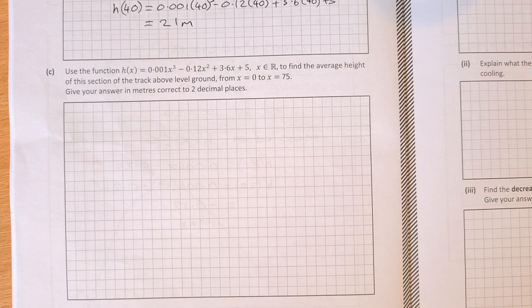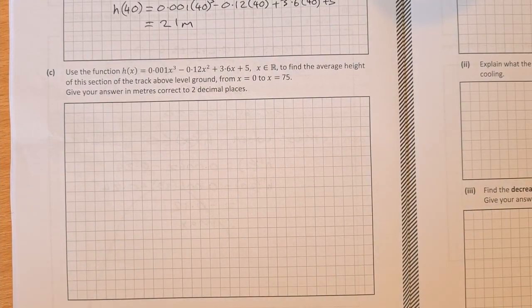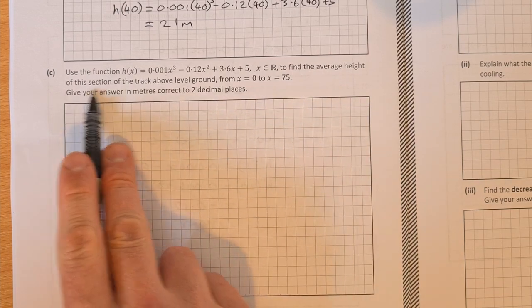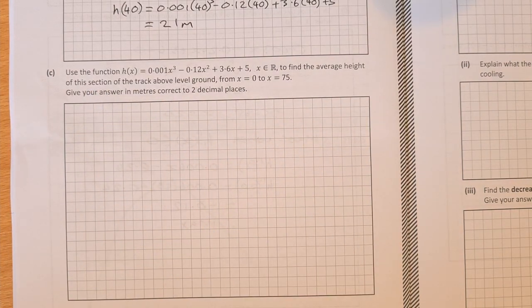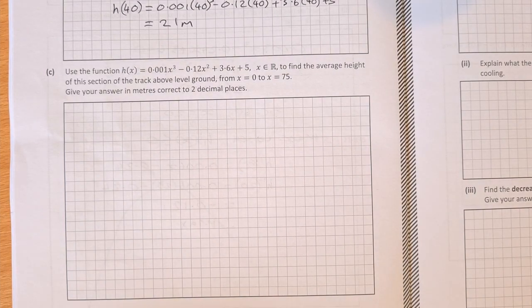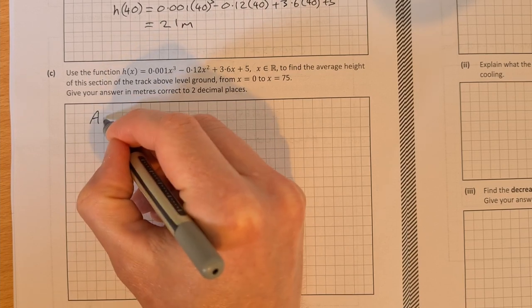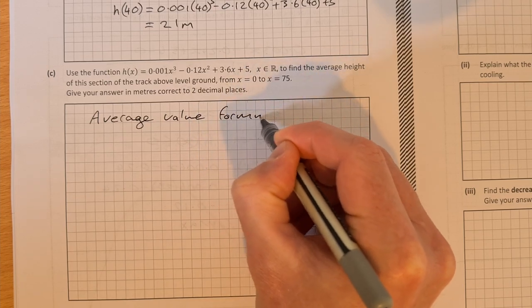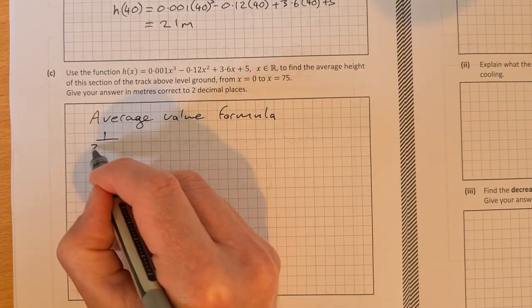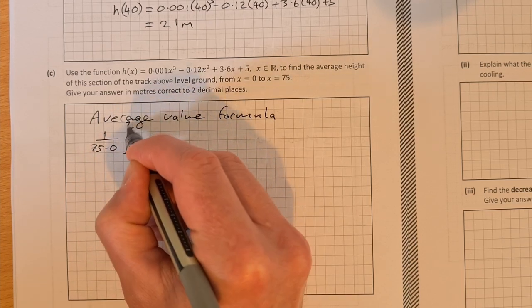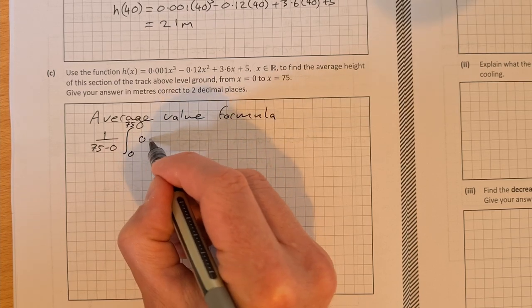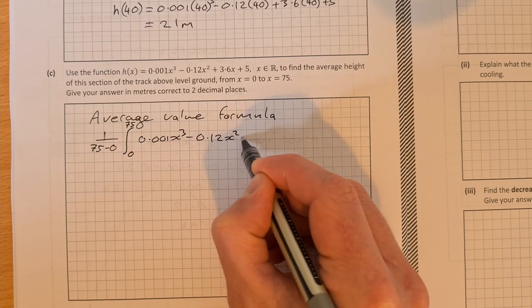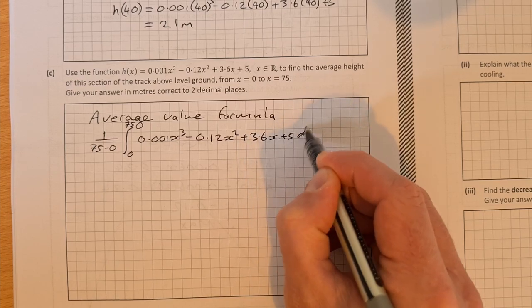And the last bit then, so our first bit of integration in this test, is use the function h of x to find the average height of this section of the track above ground level from 0 to 75. Give your answers in meters correct to 2 decimal places. So we're going to use the average value formula. So that's 1 over 75 minus 0 times the integral from 0 to 75 of our function 0.001x cubed minus 0.12x squared plus 3.6x plus 5 dx.